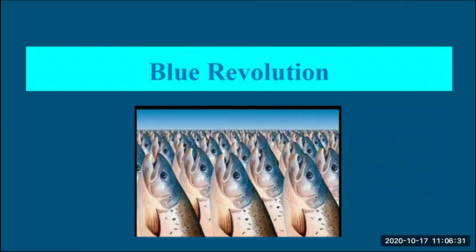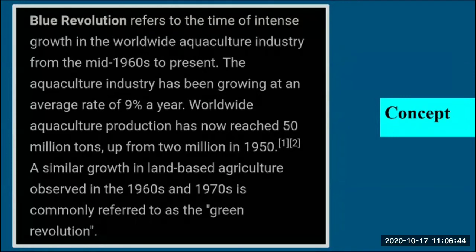The Blue Revolution refers to the time of intense growth in the worldwide aquaculture industry from the mid-1960s to the present. The aquaculture industry has been growing at an average rate of nine percent per year worldwide. Aquaculture production has now reached 50 million tons, up from 2 million in 1950. This is similar in growth pattern to the Green Revolution seen in land-based agriculture in the 1960s–70s.